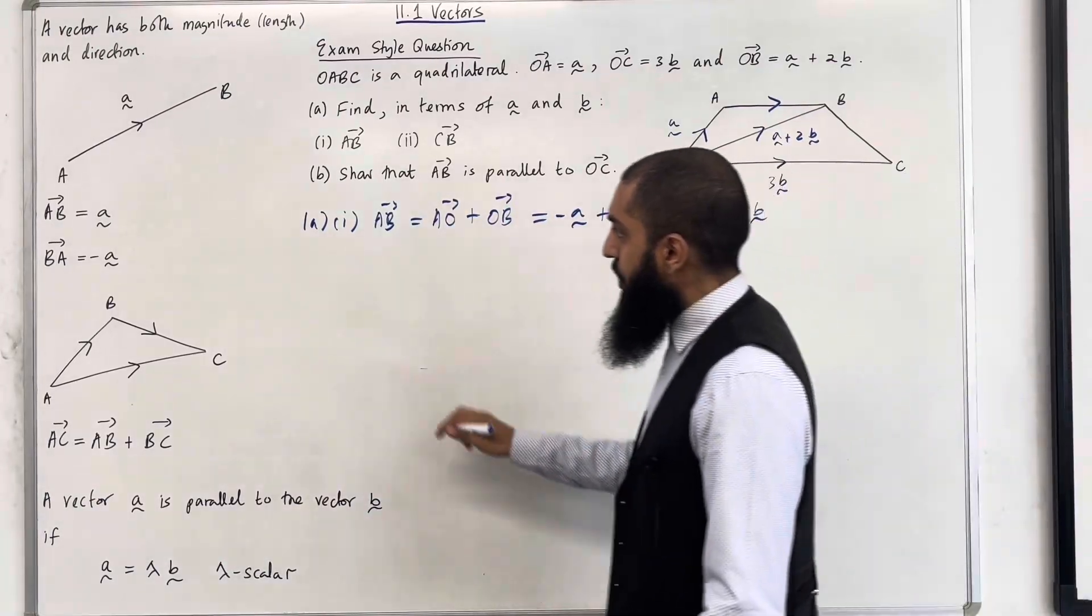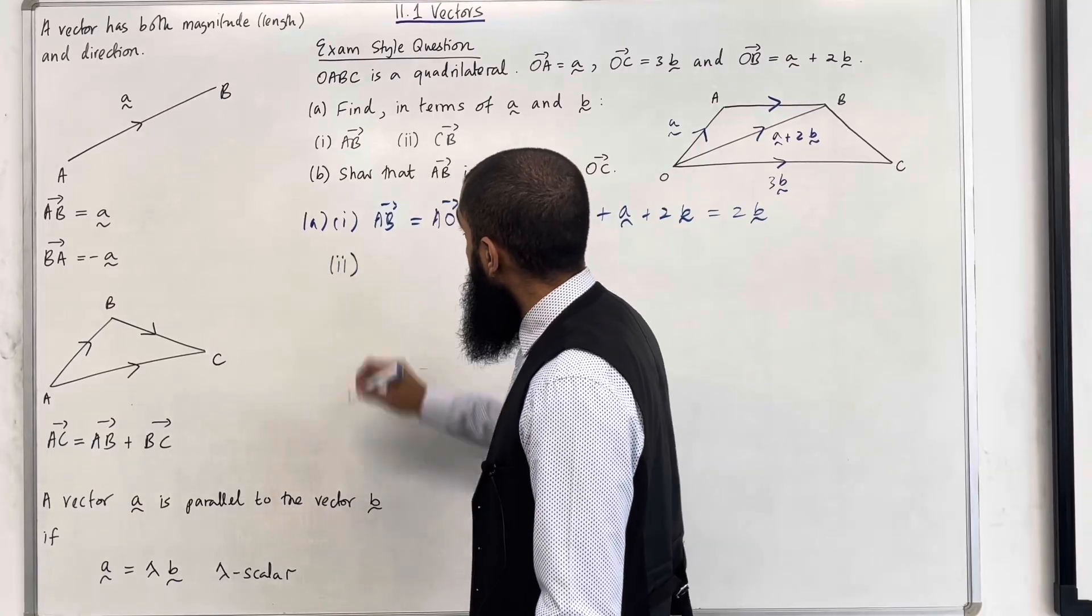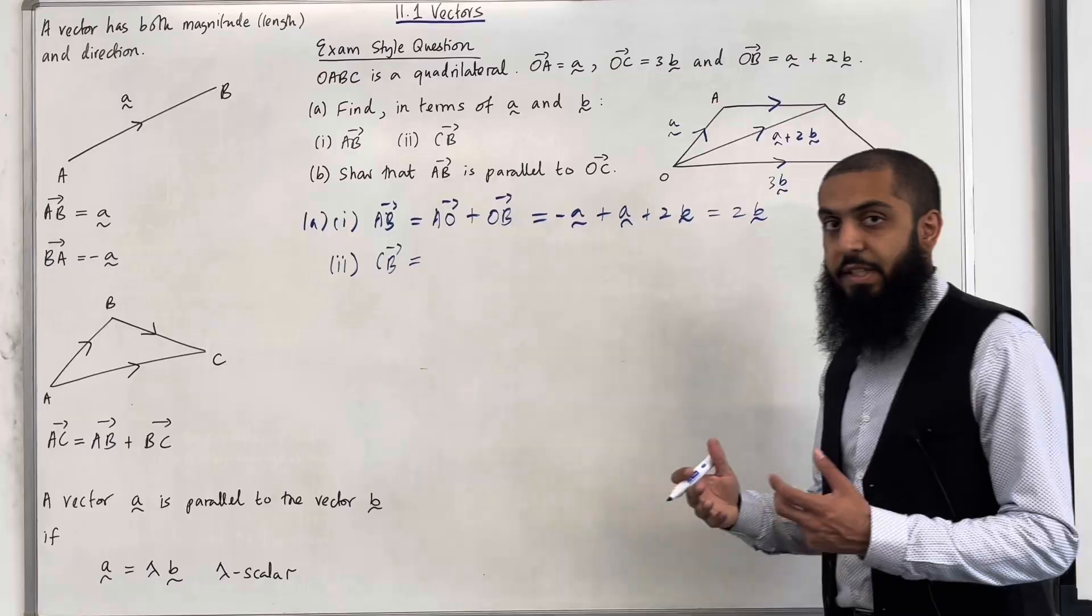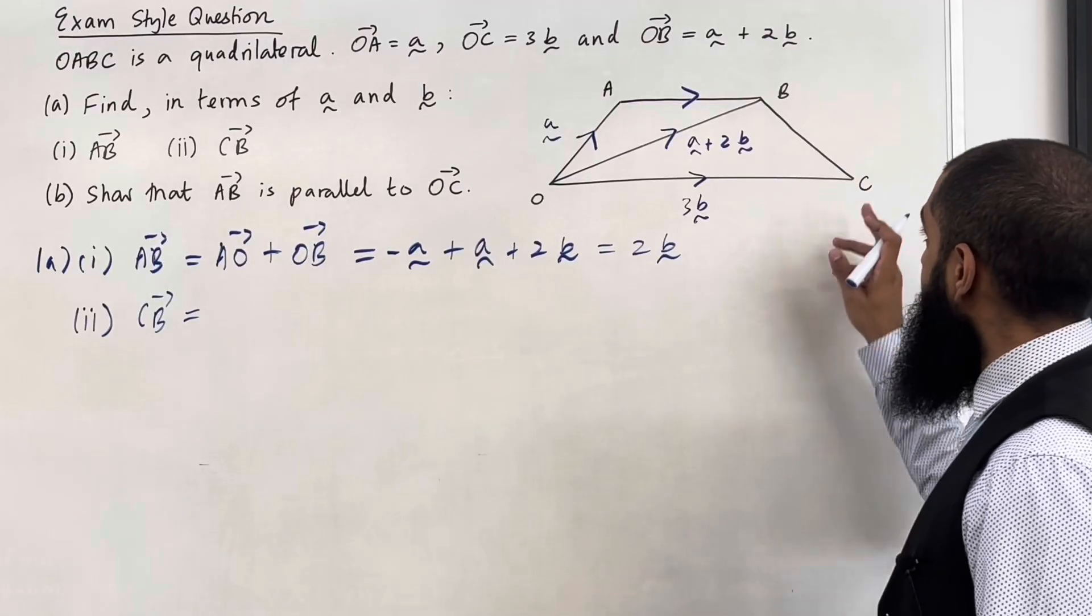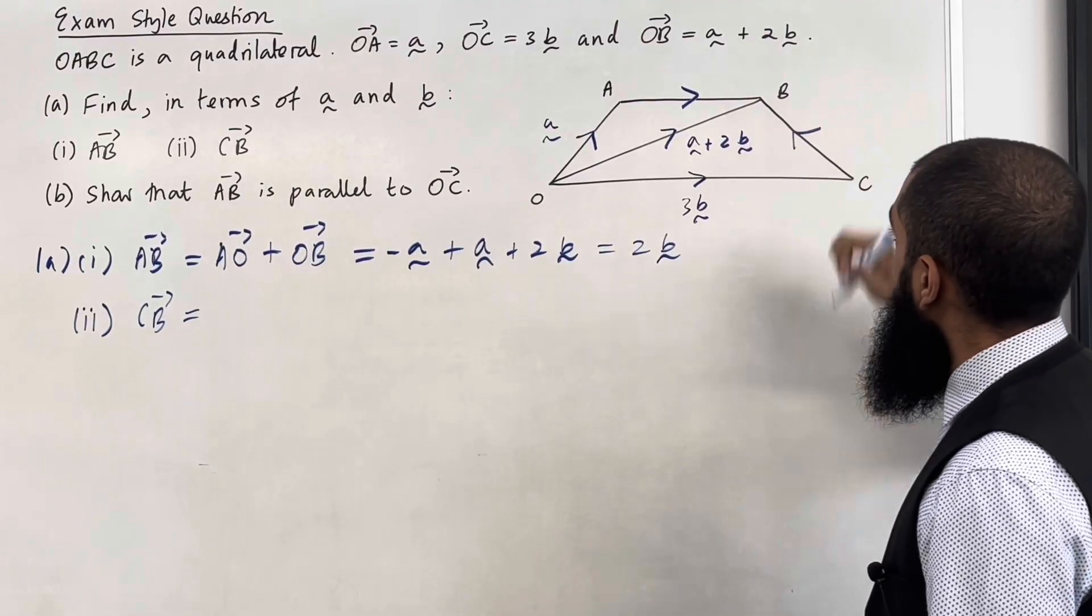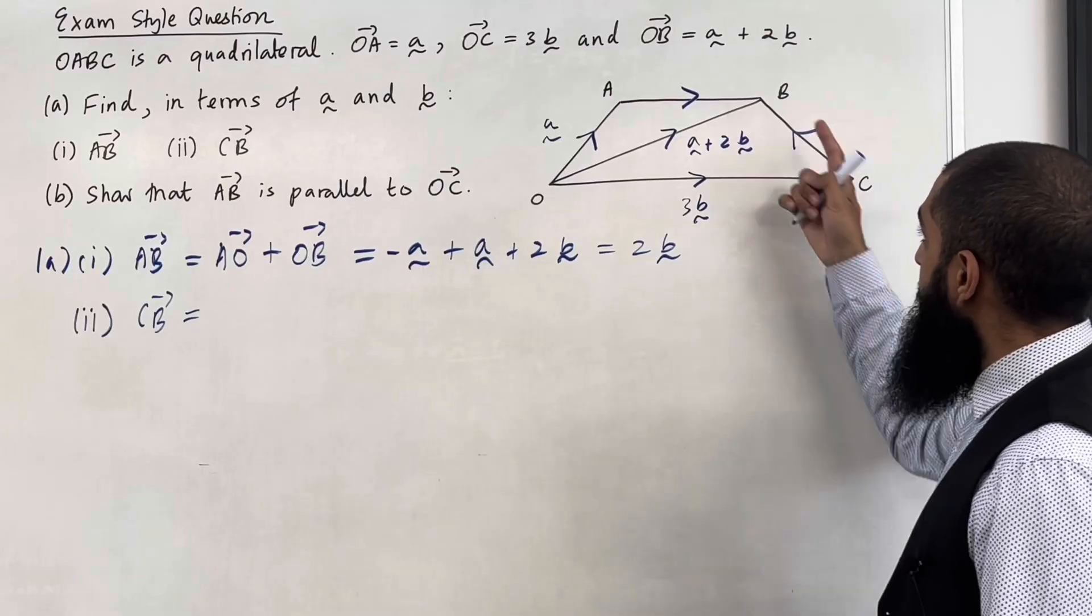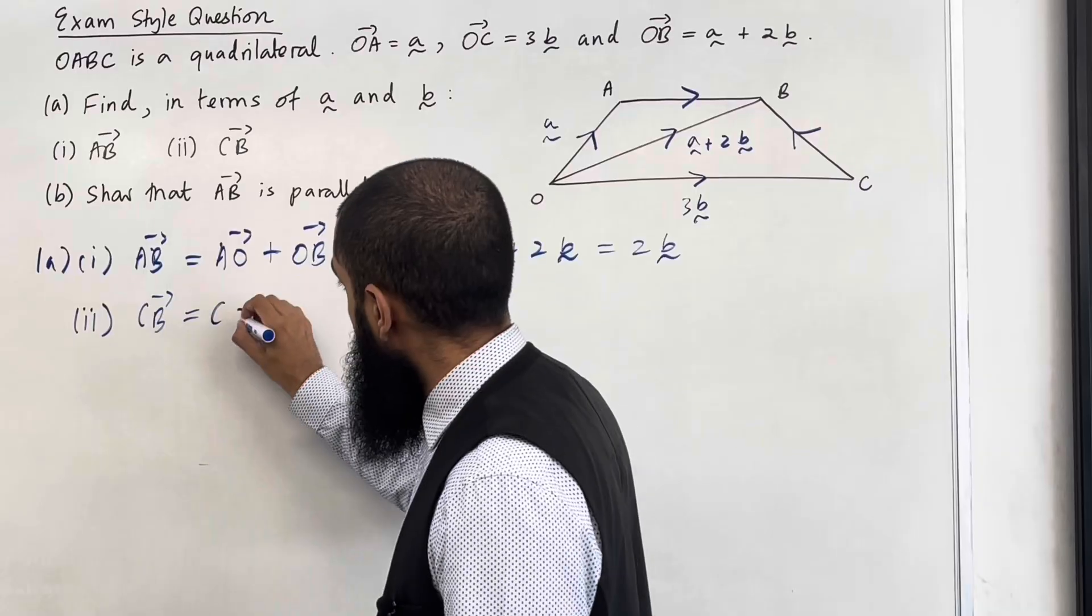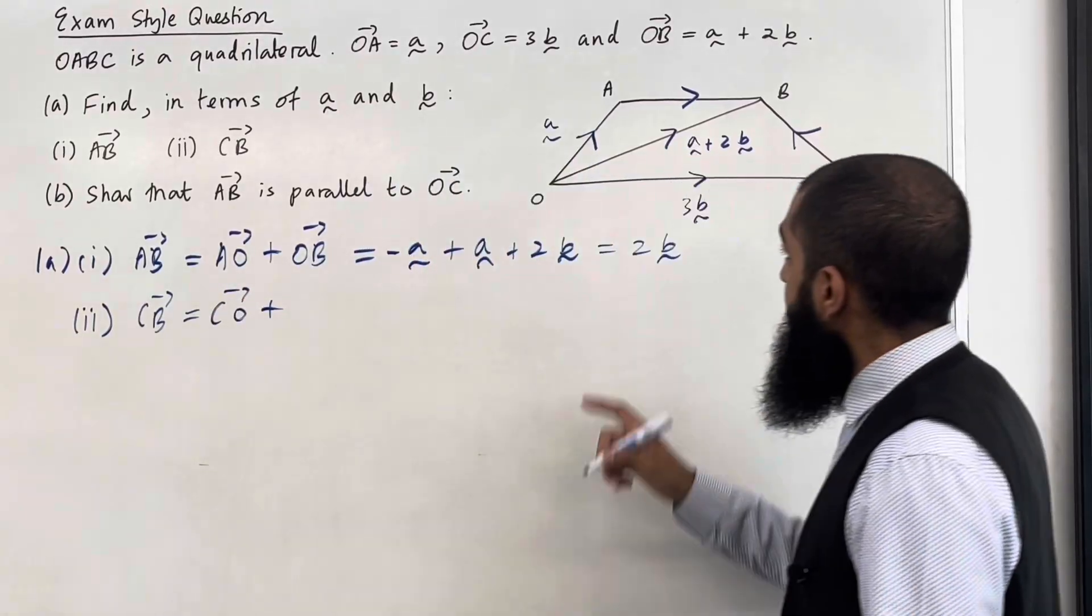Okay, let's have a look at part 2 of the question. So now we want to work out the vector C to B. Let's go back to the diagram. So we want the vector C to B. That is your arrow. So how do we get from C to B? Well, we can do C to O plus O to B.